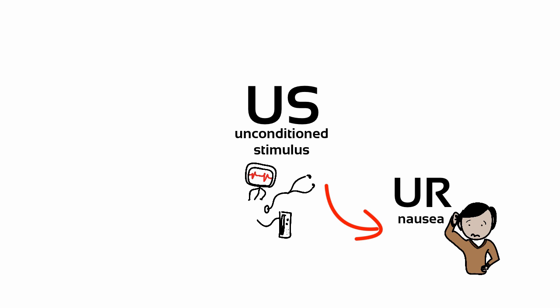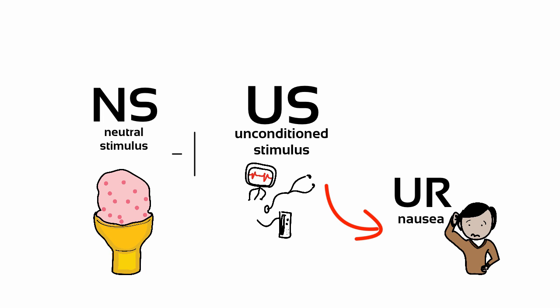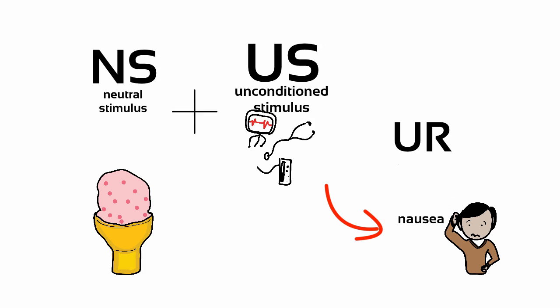Right before arriving at the hospital, a person ate a strawberry ice cream cone, which has never made them ill in the past. So the ice cream cone is therefore a neutral stimulus. Through one trial learning,